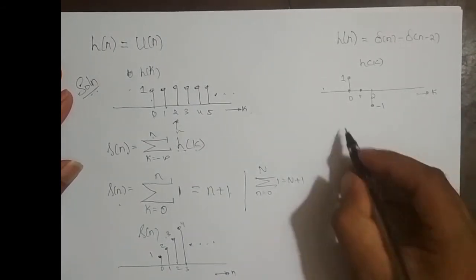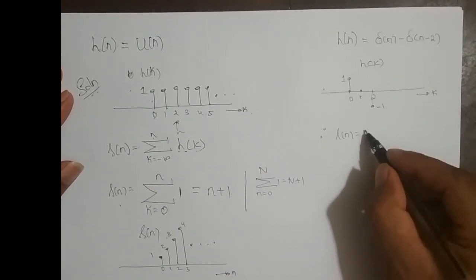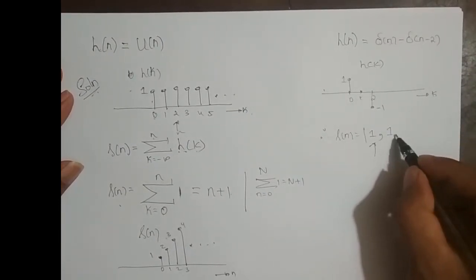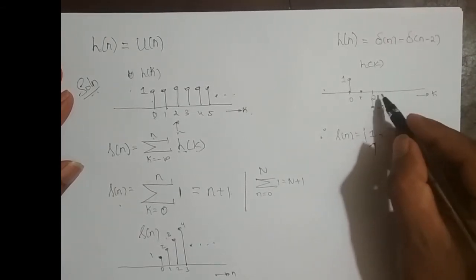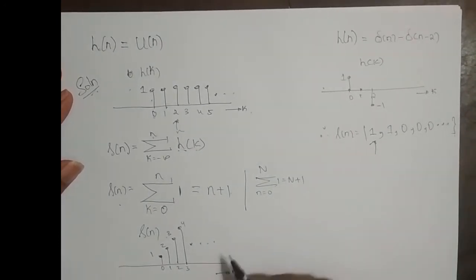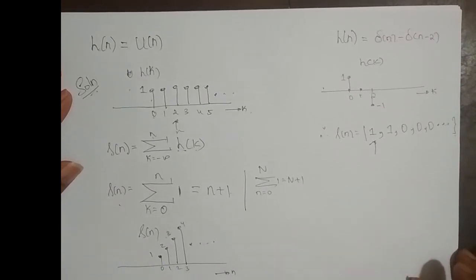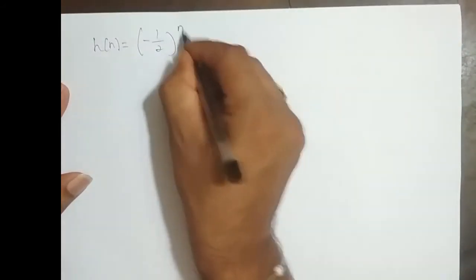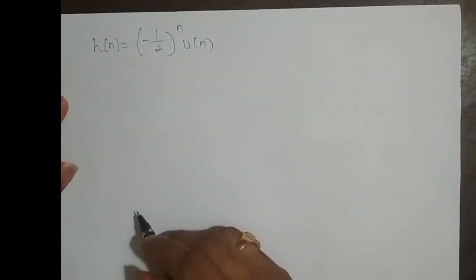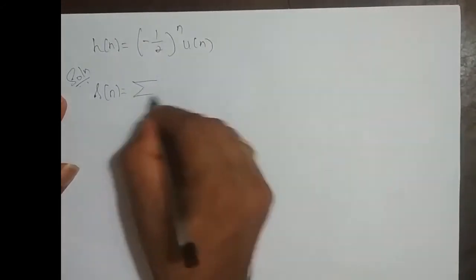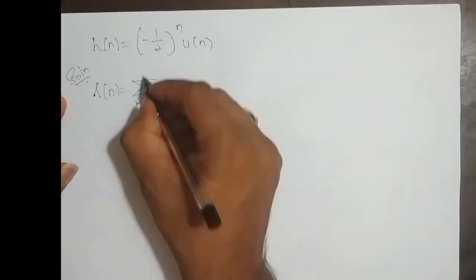So till n equal to infinity it is 0. Therefore, S of n is equal to: at n equal to 0, it is 1. After n equal to 2, it becomes 0, 0, 0, and it goes on till infinity. So we will have u of n. S of n is equal to summation k varying from minus infinity to n of h of k.